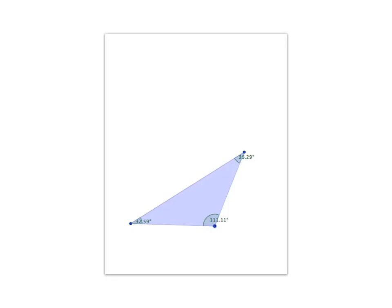But this only works if you grow all the sides in the same proportion. In other words, if you double this, you double this, you double that. If you don't do that, then it is not going to work — the shape won't stay the same and the angles won't stay the same.